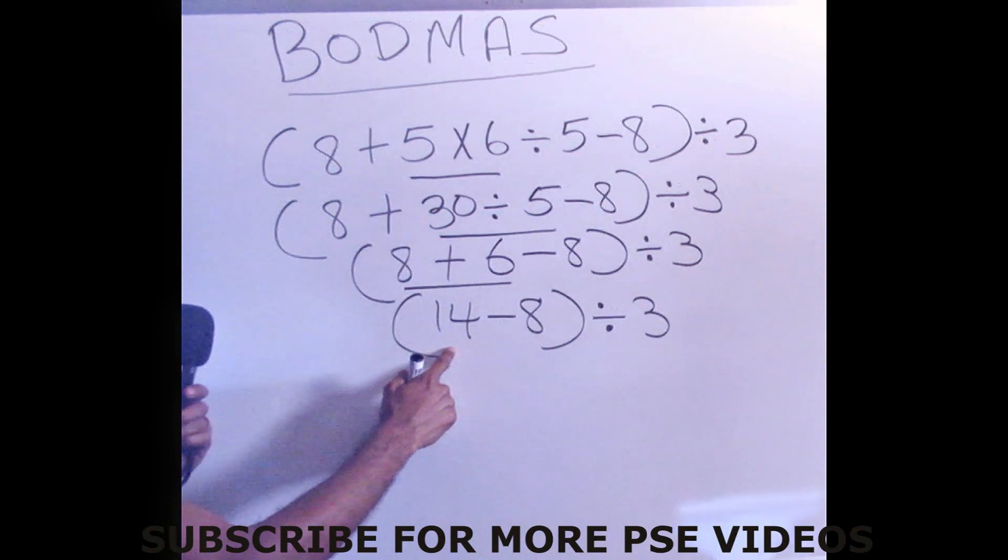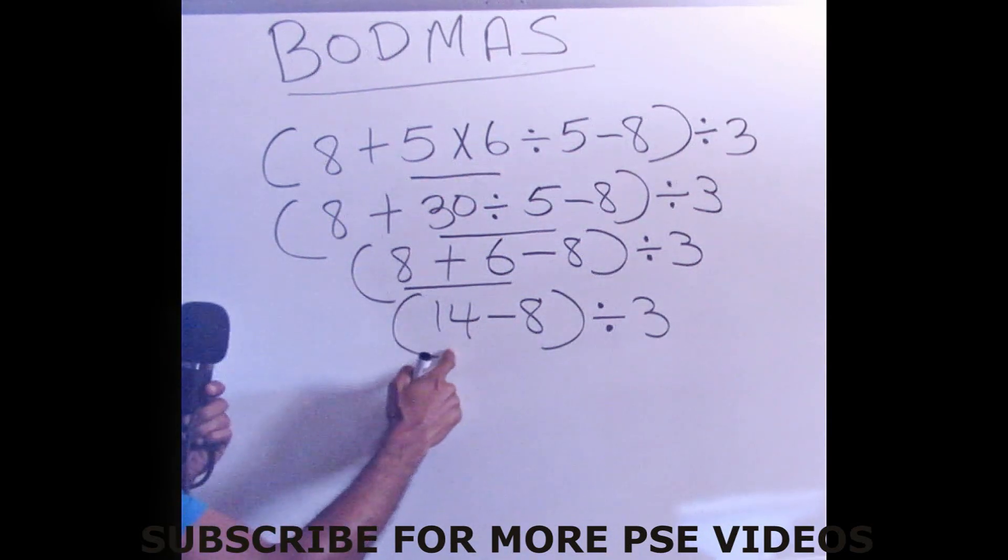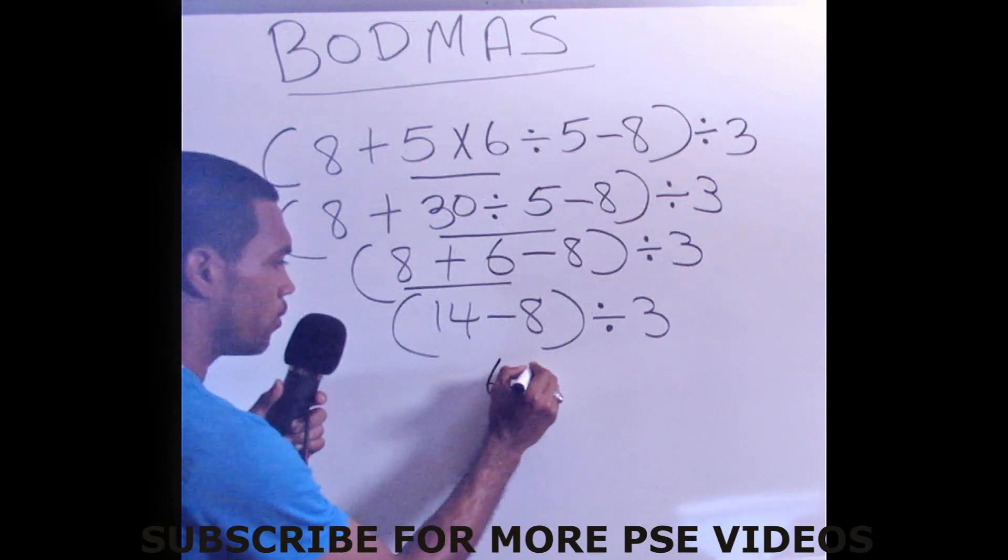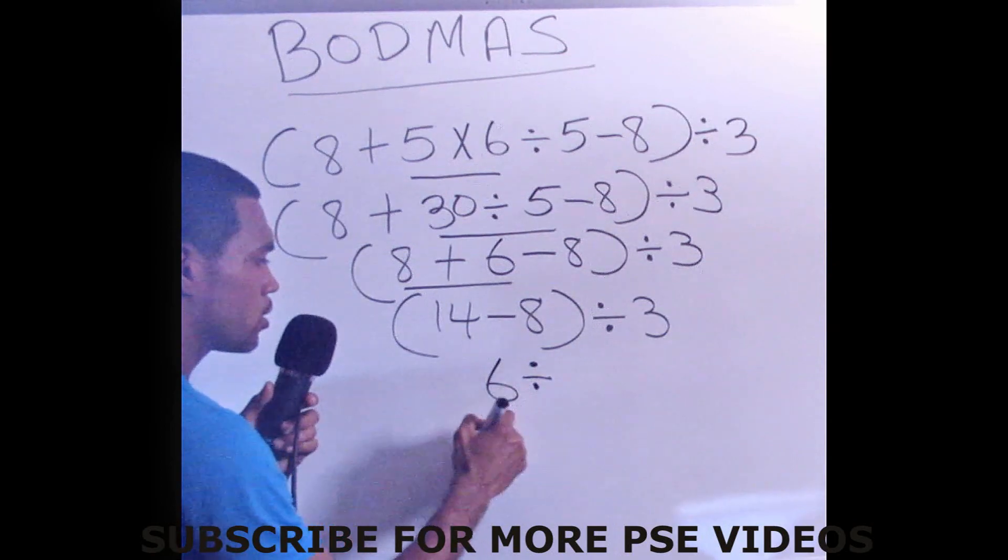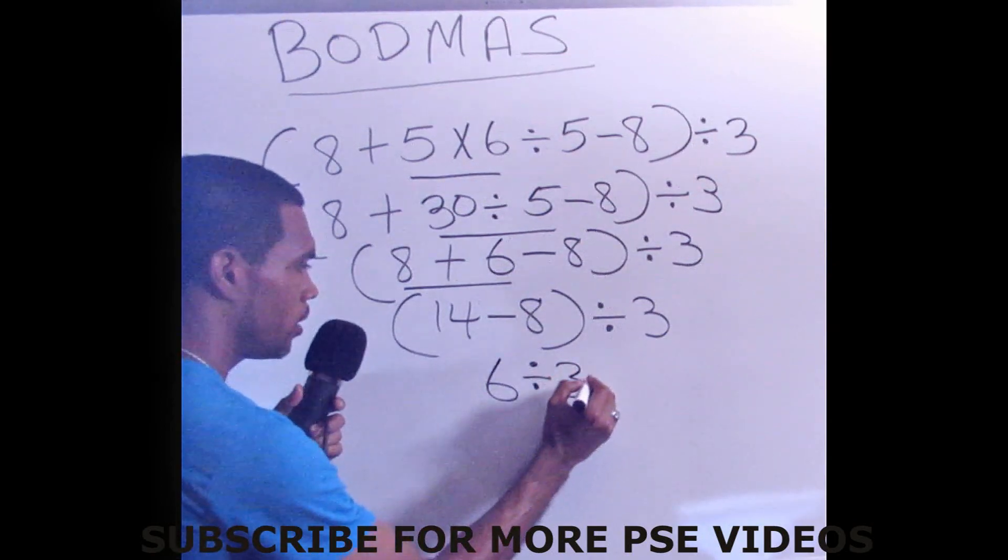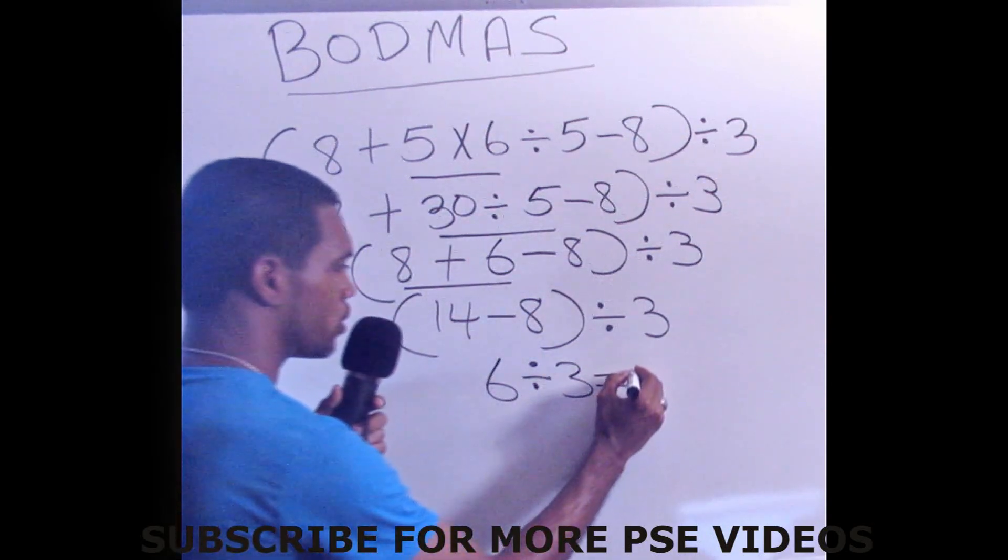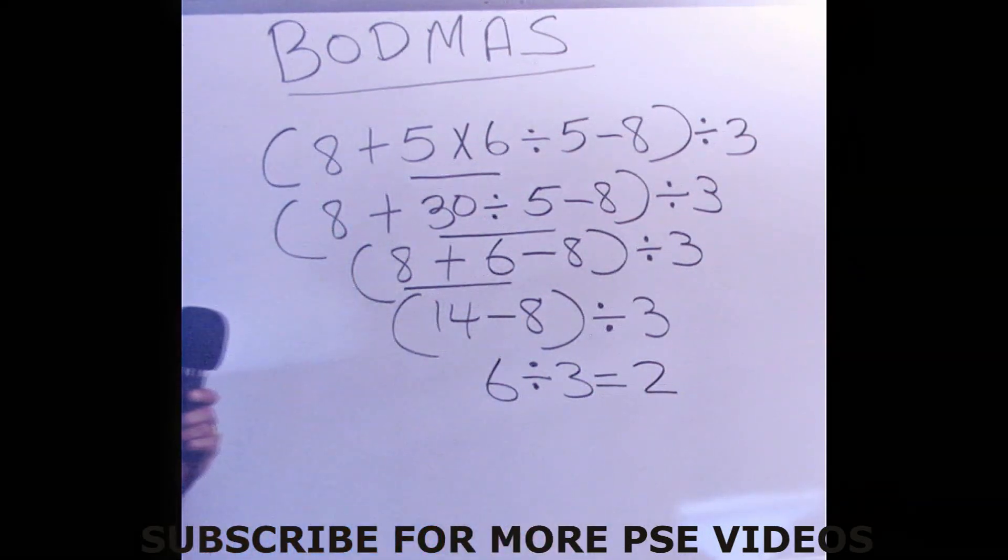So the next step, we want to work the final problem that is in bracket, and that's 14 minus 8, which is 6. Then you bring down your divide sign. So 6 divided by 3, and when you divide 3 into 6, of course, your answer is 2.